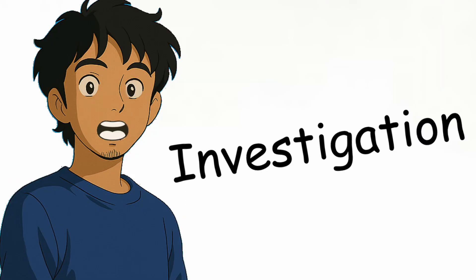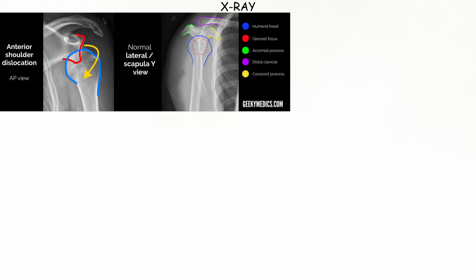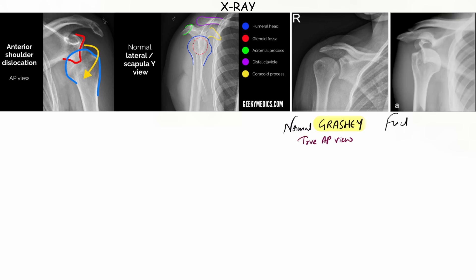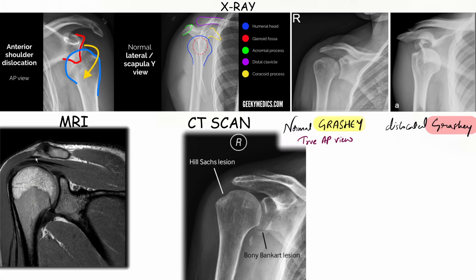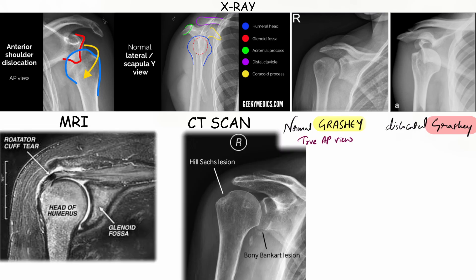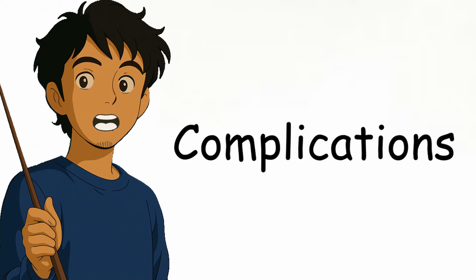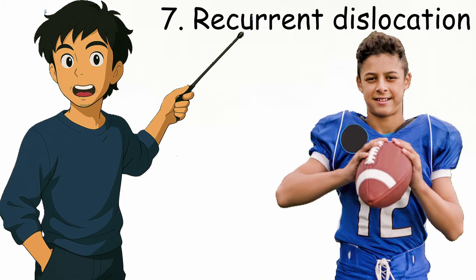Under investigations, X-ray views include anteroposterior and axillary or scapular Y view. The true anteroposterior view is also called the Grashey view, in which the humeral head lies anterior and inferior to the glenoid cavity — usually done to rule out fractures. MRI is used for soft tissue injuries like labrum, rotator cuff, or capsule, while CT scan is for bony lesions such as Bankart or Hill-Sachs lesions.